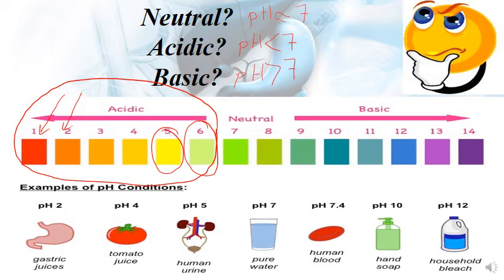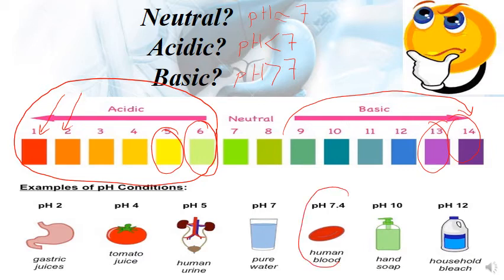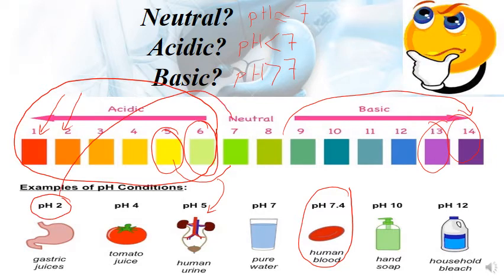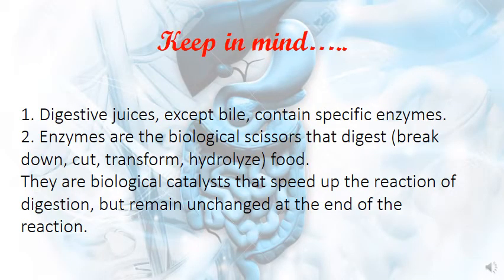Basic means pH is greater than 7. As we move toward 14 and 13, those are strong bases like household bleach. Human blood at pH 7.4 is a weak base. Human urine is a weak acid since it's less than 7 but near 7. Gastric juice has a pH of 2, so it's far from 7 — it's a strong acid.